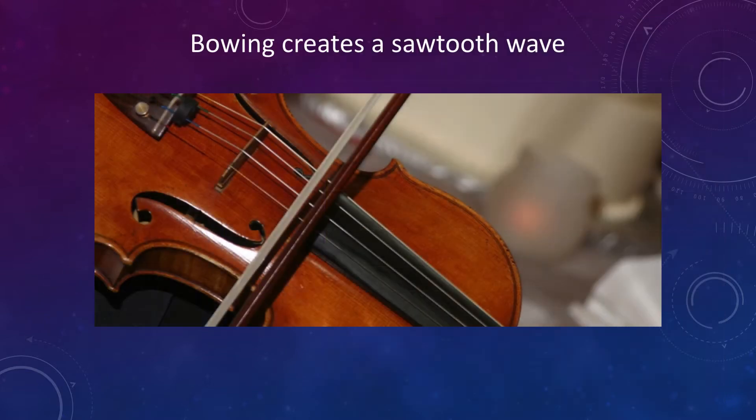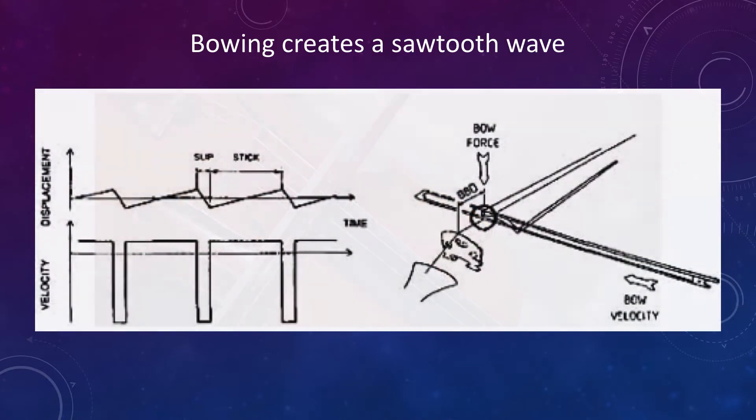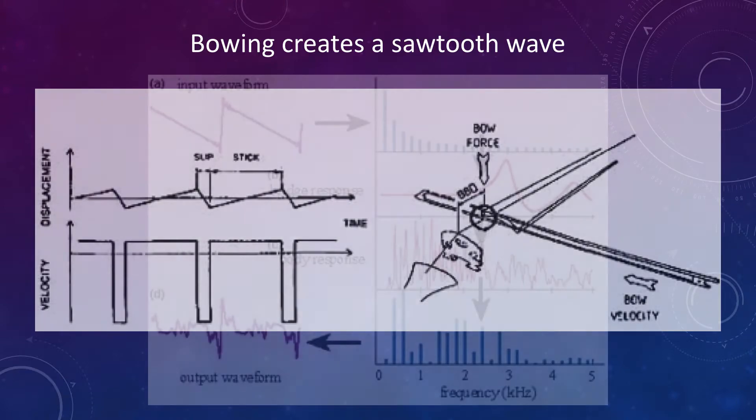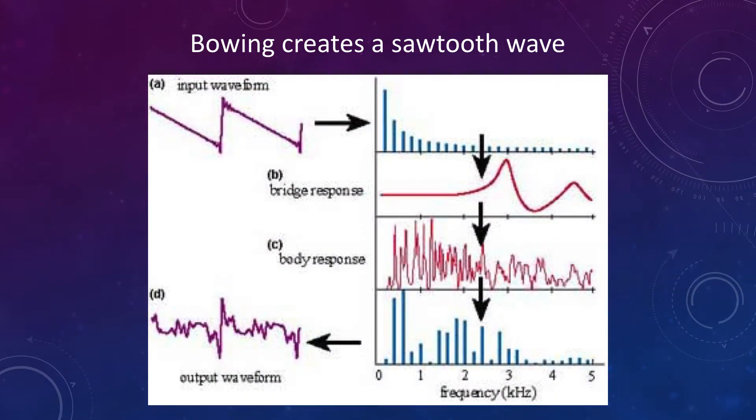Bowing a string creates vibrations in a different manner. The bow is made of horse hair and coated with rosin which makes it sticky. The bow hair pulls the string and when the tension is too much for the rosin, the string snaps back. The continual bowing causes this to repeat. The displacement of the string is similar to a sawtooth wave. Remember that a sawtooth wave has all harmonics with an amplitude equal to 1 over n, so it is rich in harmonic frequencies.